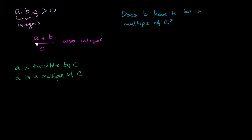We could rewrite a plus b over c as a over c plus b over c. This expression is the exact same thing as our first expression, so we know that this entire thing is going to be an integer.